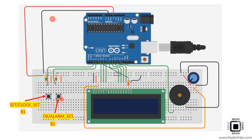The second button B2 is also a multi-functional button, used for approving — that is OK. If you have done some setting and need to approve it, you use this button as OK. This button can also be used to enter into alarm setting mode. Digital pin 4 of the Arduino is connected to the LCD backlight anode via a resistor to control the backlight.